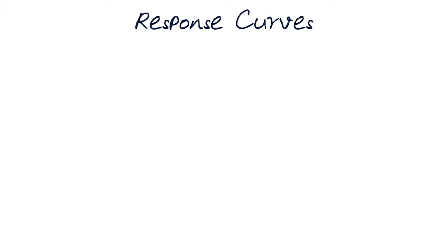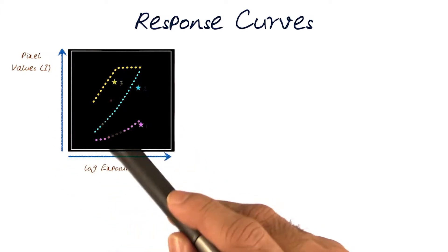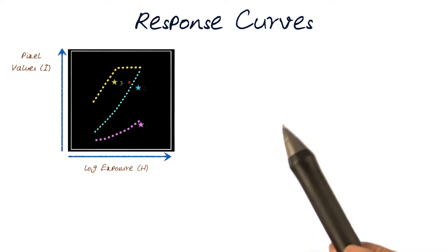We can use this to now start building response curves. So this was what we had in the last slide, which basically had the log of exposure, pixel values, and these were the three different points. And we were able to trace them out equally in all three of them.